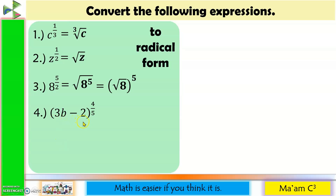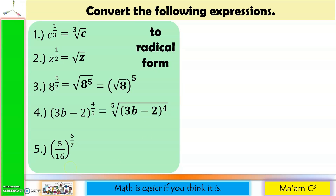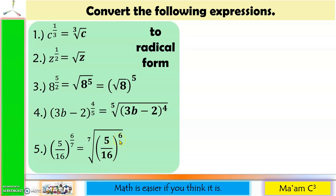Number 4: the quantity 3b minus 2 raised to 4 over 5. The denominator 5 becomes the index and 4 becomes the exponent, so this equals the 5th root of the quantity 3b minus 2 raised to the 4th power. Or equivalently, the quantity 5th root of 3b minus 2, raised to the 4th power. Number 5: the quantity 5 over 16 raised to 6 over 7. The 7 becomes the index and 6 becomes the exponent, giving the 7th root of the quantity 5 over 16 raised to the 6th power, or the quantity 7th root of 5 over 16 raised to the 6th power.